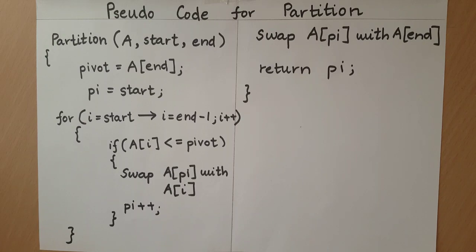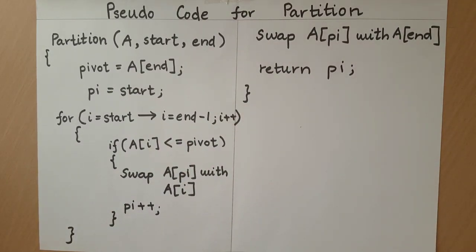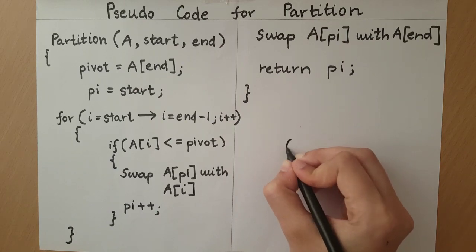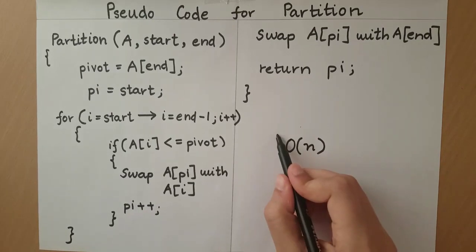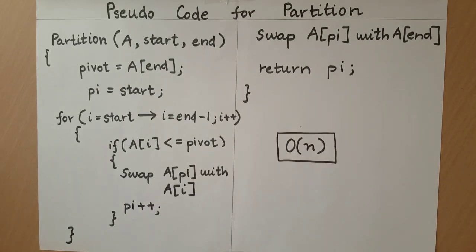If you take that the array has n number of elements, then the loop over here will run n times. Therefore, we can say that this function is of order n. The big O notation of this algorithm is order of n.